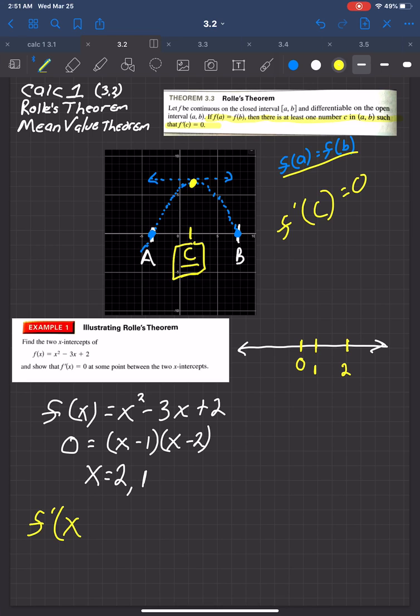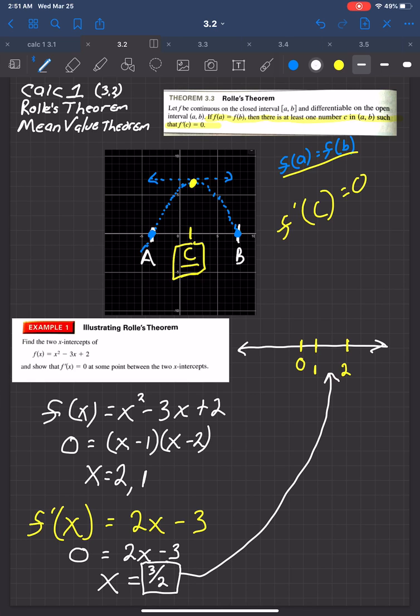So, let's start with f prime of x. Well, that's an easy derivative to take. So, that's just going to be 2x minus three. And now, let's go ahead and set the derivative equal to zero. Add three, divide by two. So, x is equal to three halves. Okay. That's interesting. Wait. Is three halves in between one and two? Three halves, 1.5 it is. Indeed, it is. So, notice it said that, and show, so this is the c value. And notice that there is a c value between one and two where the derivative is equal to zero. That is Rolle's theorem. Not that bad. Let's do one more.